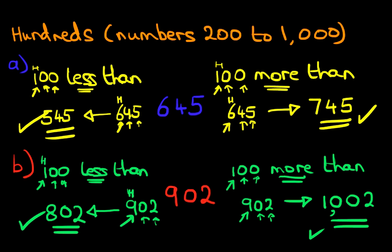So 100 less than 902 is 802. And that is how we do more than and less than of hundreds with numbers from 200 to 1000.